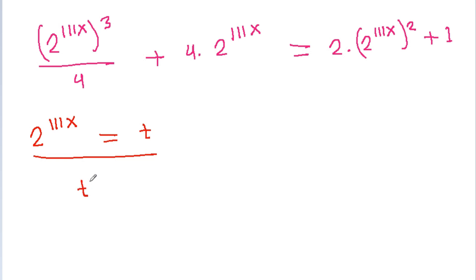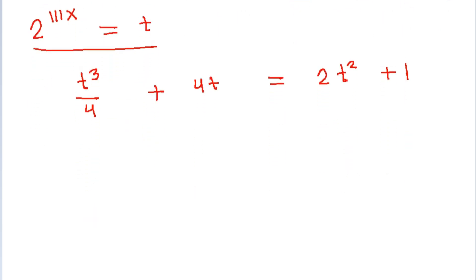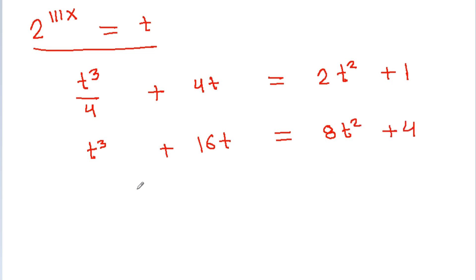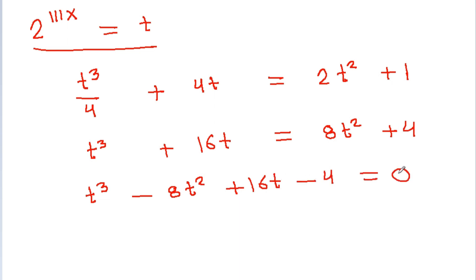We get t cubed divided by 4 plus 4t is equal to 2t squared plus 1. And if we multiply by 4, then we get t cubed plus 16t is equal to 8t squared plus 4. Rearranging, it is t cubed minus 8t squared plus 16t minus 4 is equal to 0.